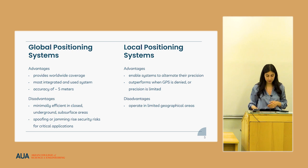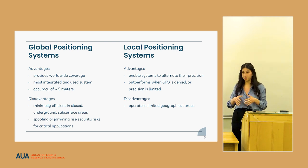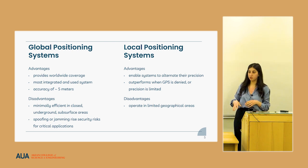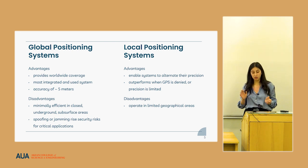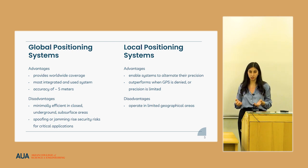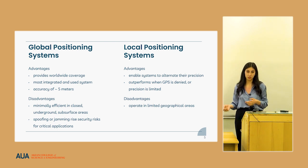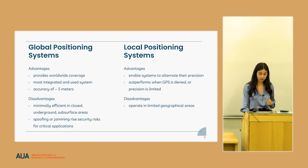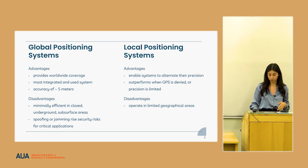However, there are disadvantages for GPS. The main ones are that it is minimally efficient in indoor areas and underground or subsurface areas, and it is very sensitive to spoofing or jamming, which can raise security risks. On the other hand, local positioning systems allow you to alternate their precision — get higher precision if needed or reduce it for lower power consumption — and may outperform GPS when it is denied, for example in indoor or underground environments.